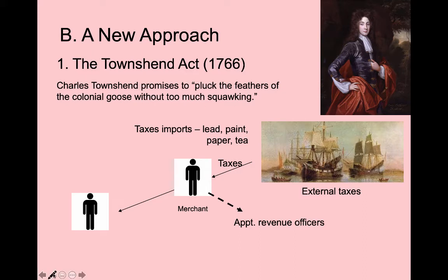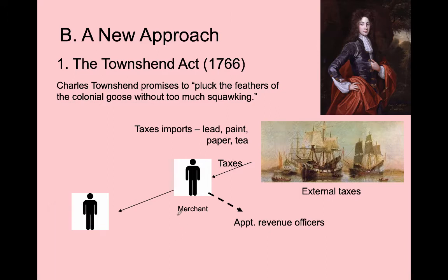In this diagram, taxes are assessed at the port and collected by revenue officers—revenue meaning taxes and money. The king and parliament hire these revenue officers in the colonies to collect the tax at the port. Most colonists won't see it, and England still gets their money. Charles Townshend thinks this is a good solution to the problems created by the Stamp Act.